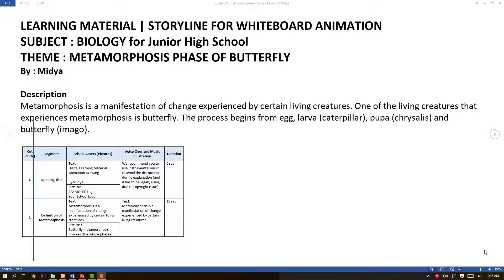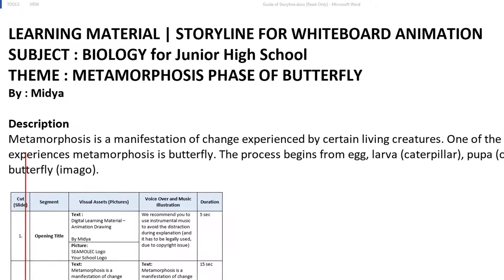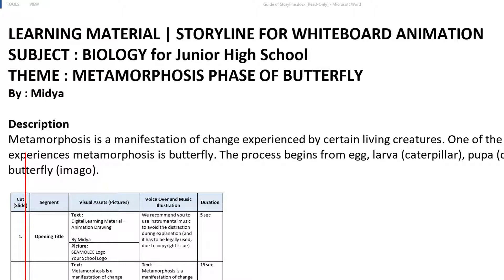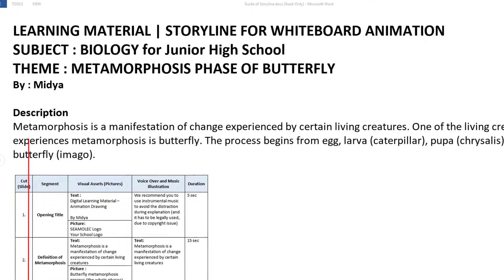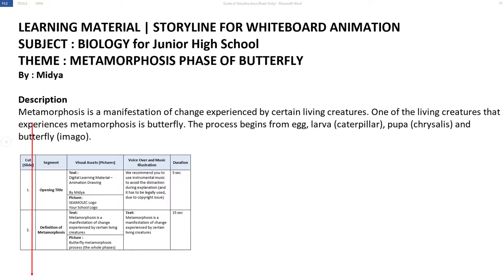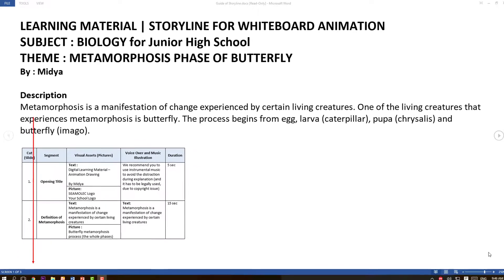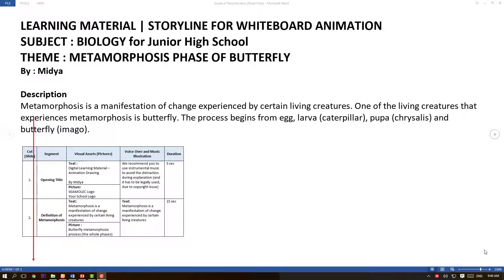You can start the description with an explanation about metamorphosis. In my storyline, I describe metamorphosis as a manifestation of change experienced by certain living creatures. One of the living creatures that experiences metamorphosis is the butterfly. The process begins from an egg, then larva or caterpillar, then pupa or chrysalis, and finally butterfly or imago.